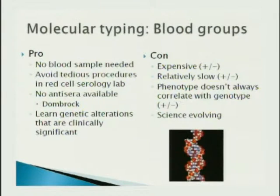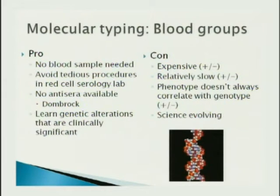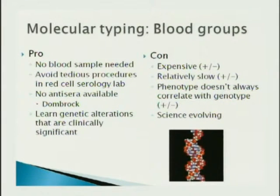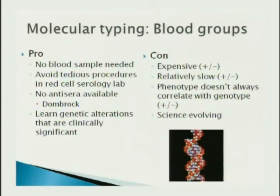For molecular typing, the pros include: no blood sample necessarily needed, avoiding tedious procedures in the red cell serology lab, ability to type when no anti-sera is available (such as the Dombrock blood group), and learning genetic alterations that may be clinically significant. The cons: cost — though recently anti-sera reagent manufacturers have increased the cost of reagents 100% in the past year while genomics costs are coming down, so it's roughly plus-minus now. Molecular blood group typing is also relatively slow — we currently can't run a DNA sample and get a result immediately if someone needs a transfusion now.